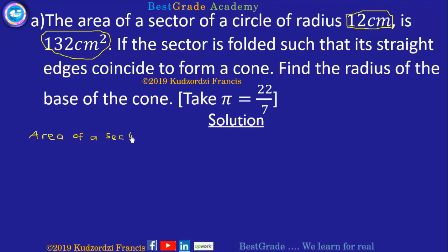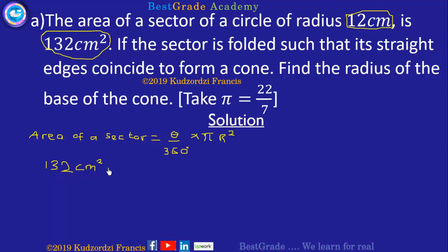The area of the sector is equal to theta over 360 degrees times pi r squared, where r is the radius. Substituting the values: 132 centimeters squared is equal to theta over 360 degrees times pi, using pi as 22 over 7, times the radius of 12 centimeters squared.